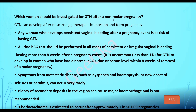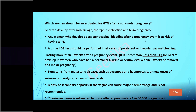Which women should be investigated for GTN after non-molar pregnancy? Any woman who develops persistent vaginal bleeding after any pregnancy event — abortion, molar pregnancy, or live birth — is at risk of having GTN. A urine HCG test should be performed in all cases of persistent or irregular vaginal bleeding lasting more than eight weeks after a pregnancy event. If a mother had a delivery eight weeks ago and her urine is still showing HCG, it could be GTN and she should be referred to a GTD center.